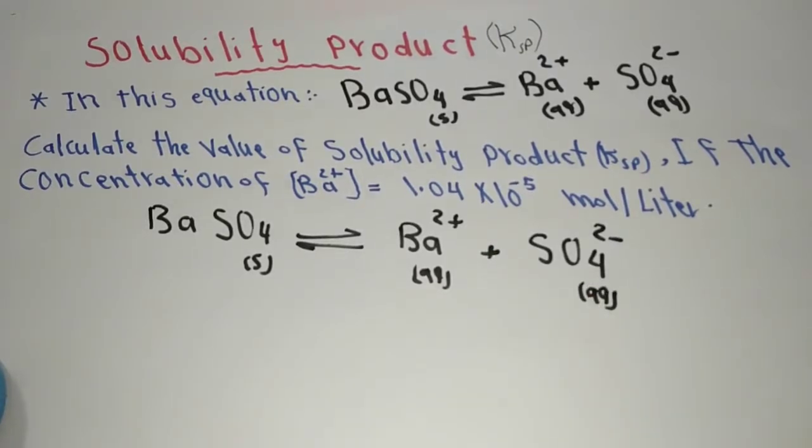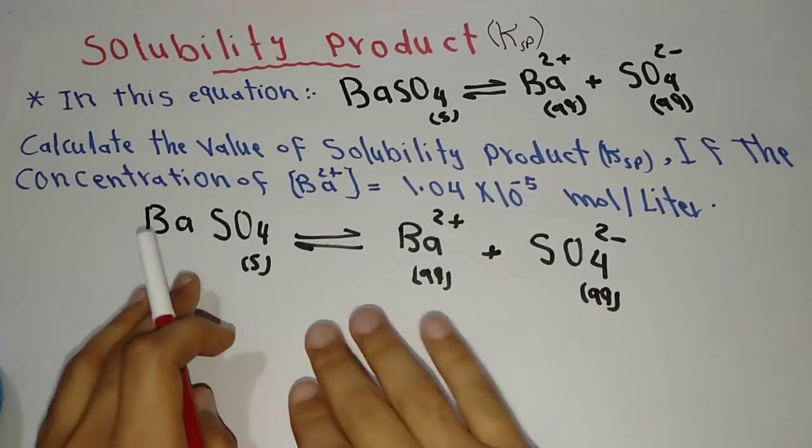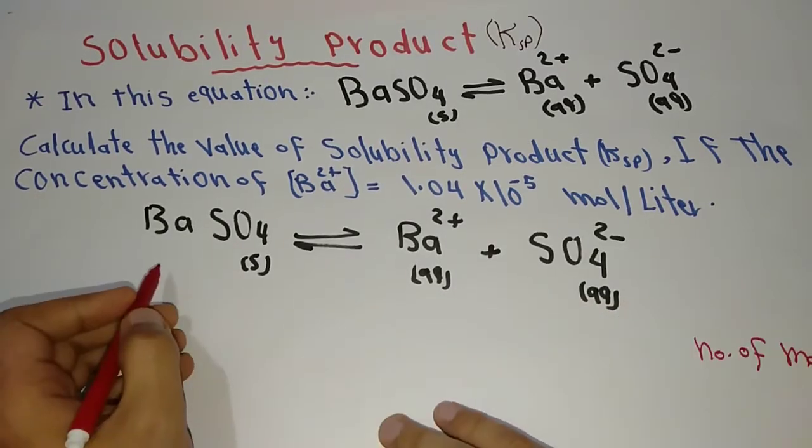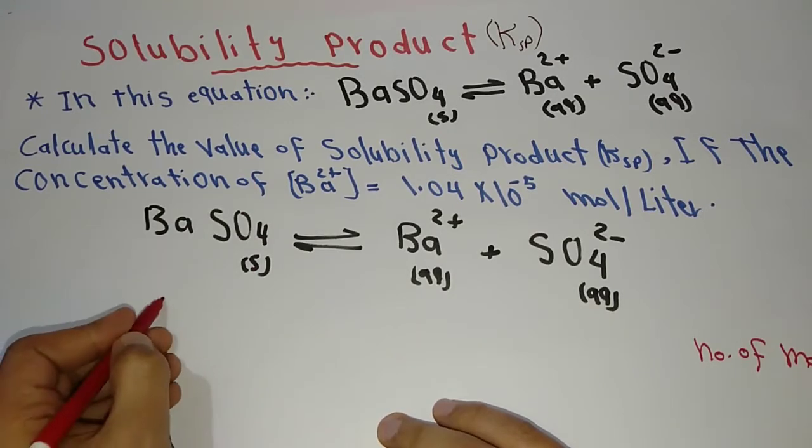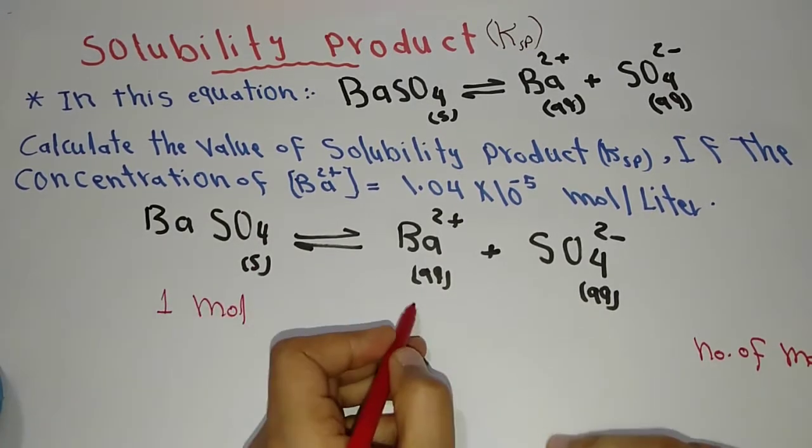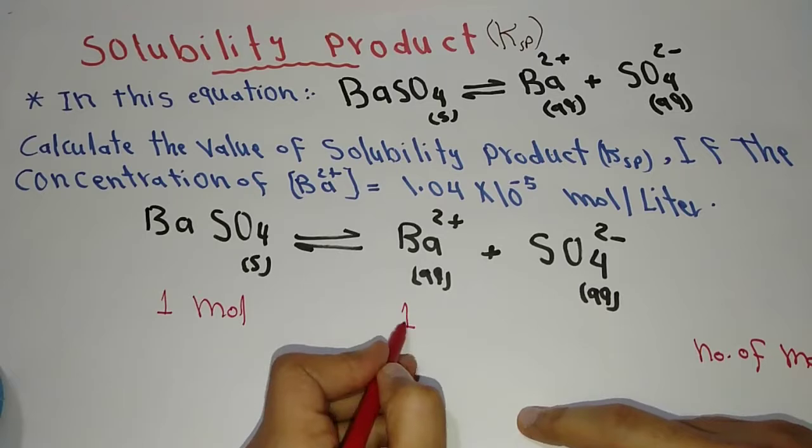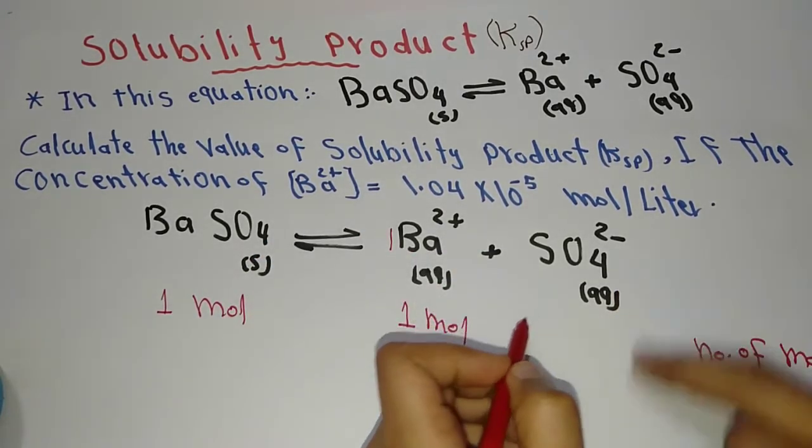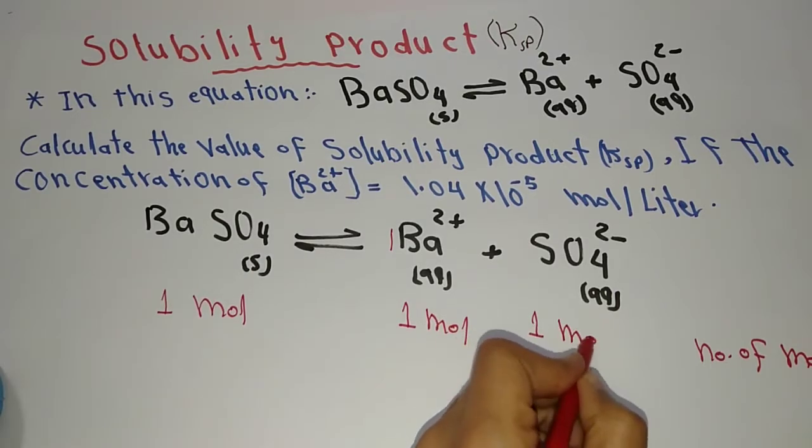You have to write the number of moles for all terms in the equation. The number of moles of the salt is one mole, and for the barium cation equals one mole also, and sulfate is also one mole.